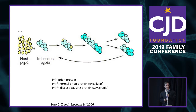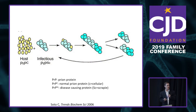The prion protein paradigm works as follows: we all actually make normal prion proteins — PrPC, or cellular prion protein. That's the normal prion protein that we all make, mainly in the brain. Then, for whatever reason, it comes into contact with the abnormal disease-causing form, PrPSc, which stands for scrapie — the first prion disease found in sheep.